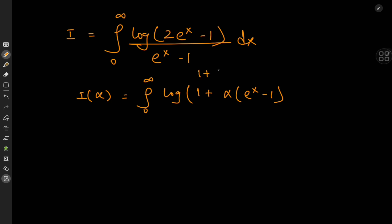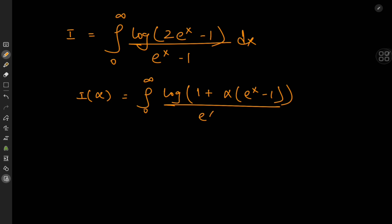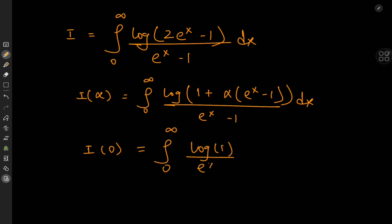If I plug in alpha equal to two, I have one plus two times e to the x minus one, that's one plus two e to the x minus two, which is two e to the x minus one — exactly what we need. And for a particular value, the no-brainer is i of zero. i of zero gives the integral from zero to infinity of log one divided by e to the x minus one, and log one is zero, so the entire thing collapses and we have i of zero equal to zero. The target integral is i of alpha evaluated at two.